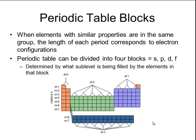This pattern continues throughout the periodic table, so that the periodic table can be divided into 4 blocks: the s block, p block, d block, and f block. That's determined by what sublevel is being filled by the elements in that block.